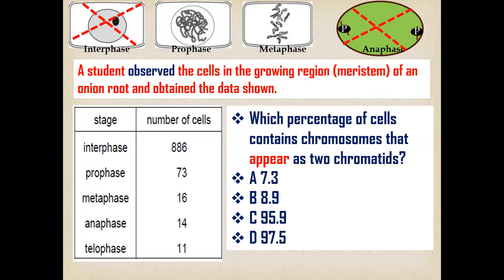While in prophase and metaphase, the chromosomes are appearing in the form of 2-chromatid conditions. So we can calculate. Before the calculation, first we will calculate the total number of cells. These are 1000.